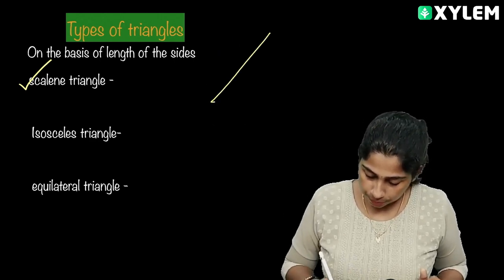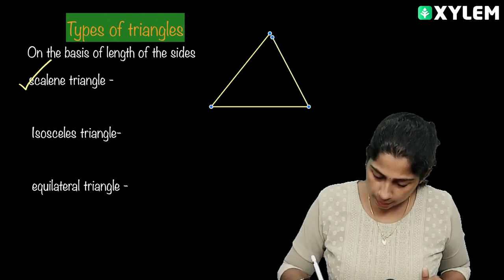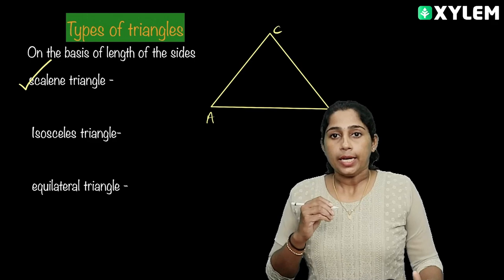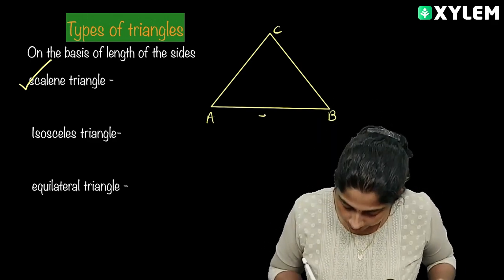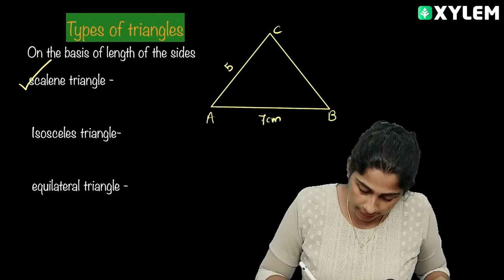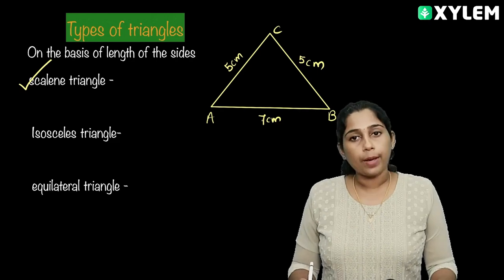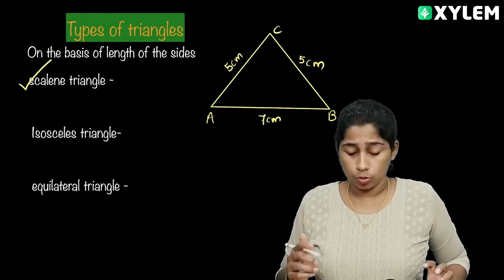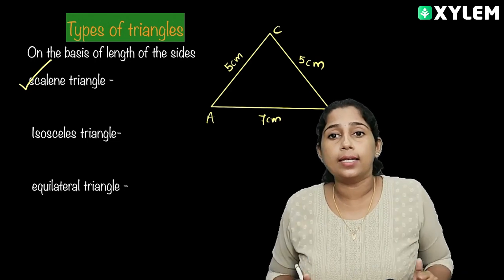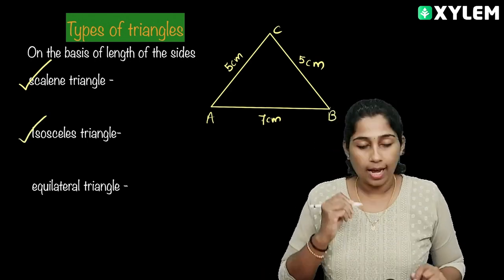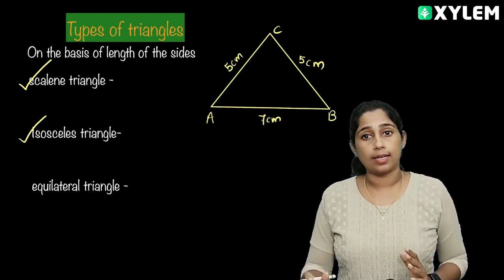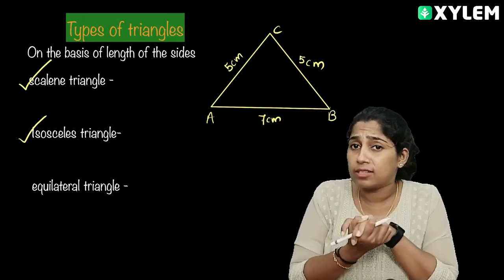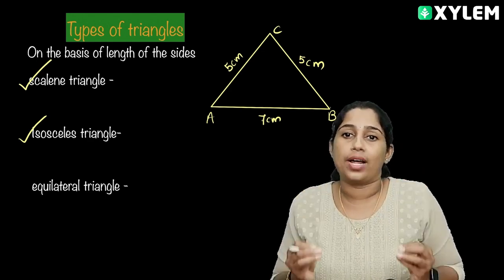Now let me draw a second triangle with vertices A, B, C. Here I have 7cm, 5cm, and 5cm. Two sides are the same length — AC and BC are the same length. This triangle is an Isosceles Triangle. Two sides have the same length, so we call it an Isosceles Triangle.